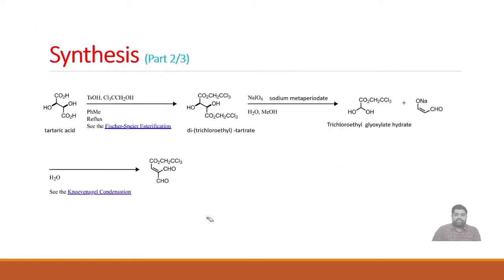Now let's see the second part, which is very easy with only three steps. The starting material is tartaric acid. Treatment with para-toluene sulfonic acid and trichloroethanol, 2,2,2-trichloroethanol, in presence of acid converts the carboxylic acid to di-trichloroethyl tartrate. Esterification happens here. This esterification is known as Fischer esterification.